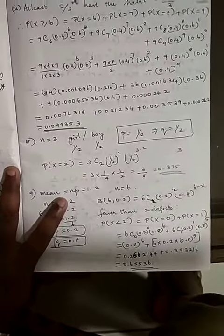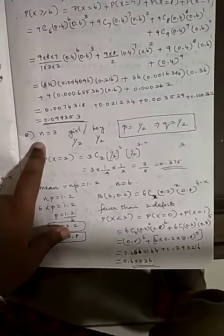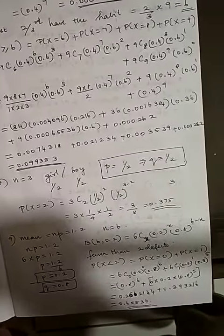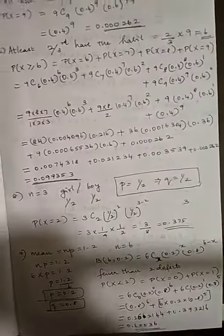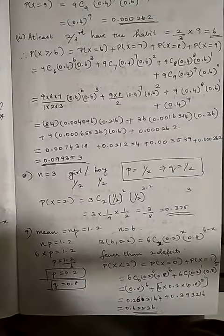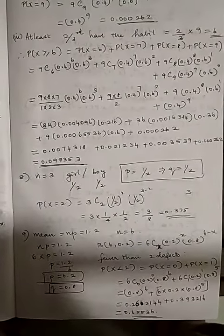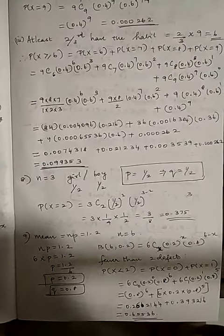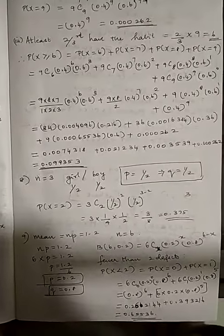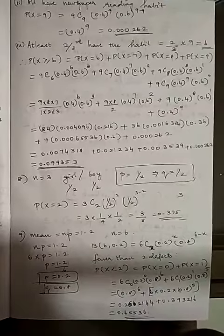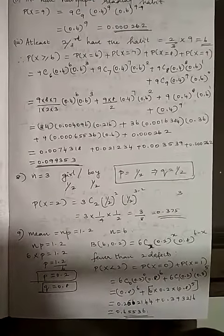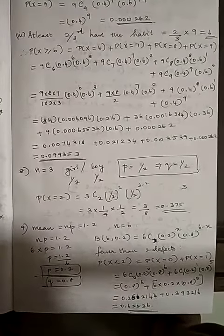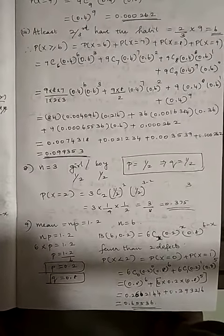Question 8: In a family of 3 children, so n = 3. The probability for a girl or boy is 1/2 each. Let X represent girls. For exactly 2 girls: P(X=2) = 3C2 · (1/2)^2 · (1/2)^1 = 3 × 1/4 × 1/2 = 3/8 = 0.375.